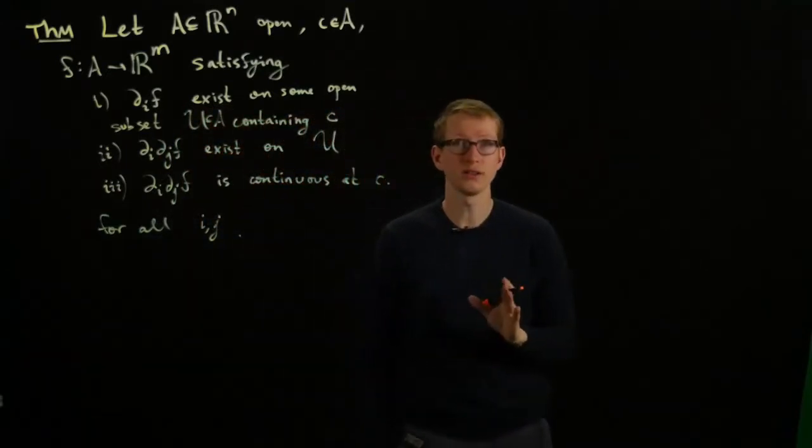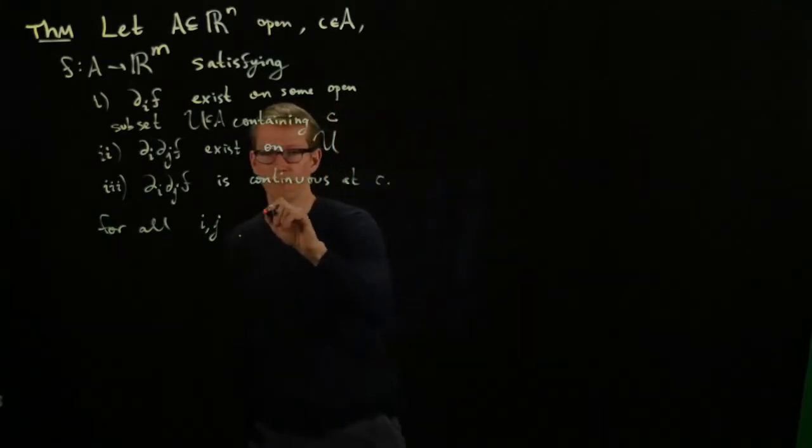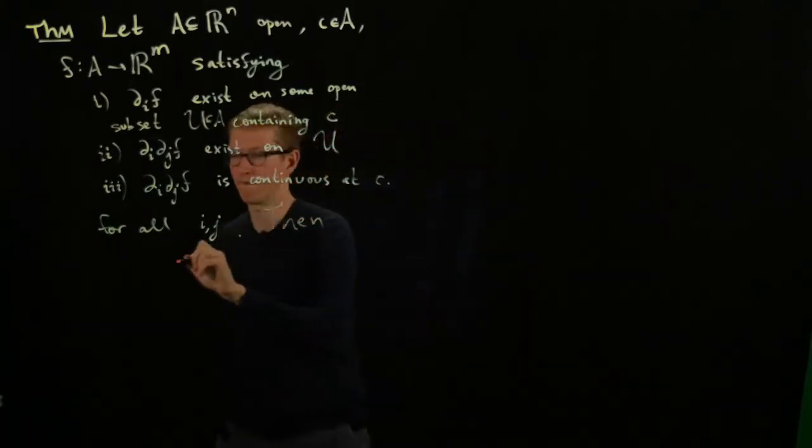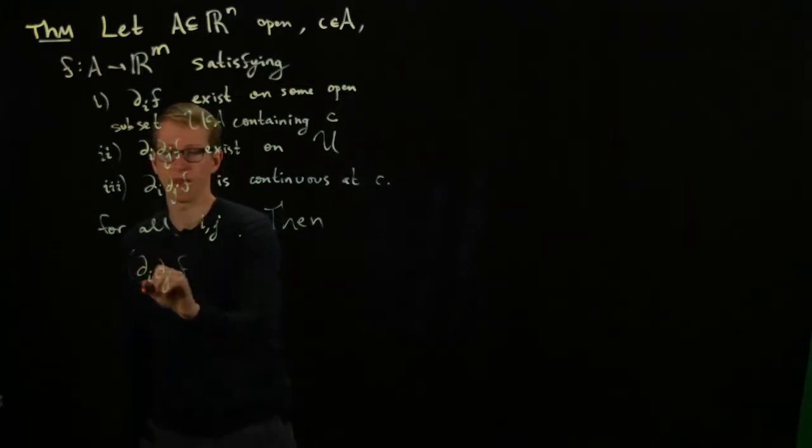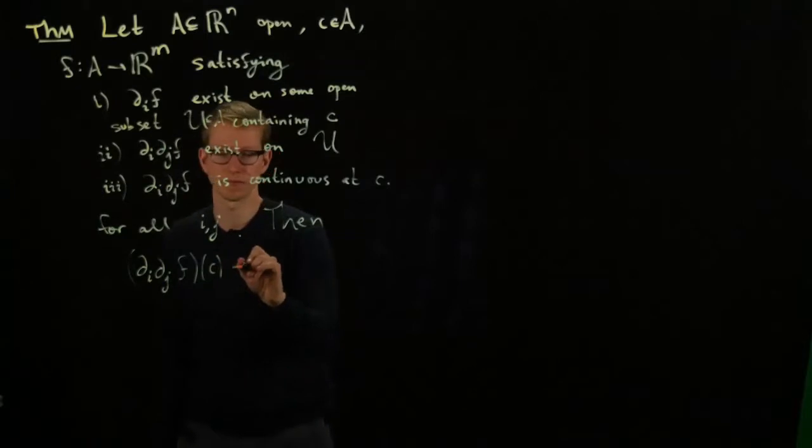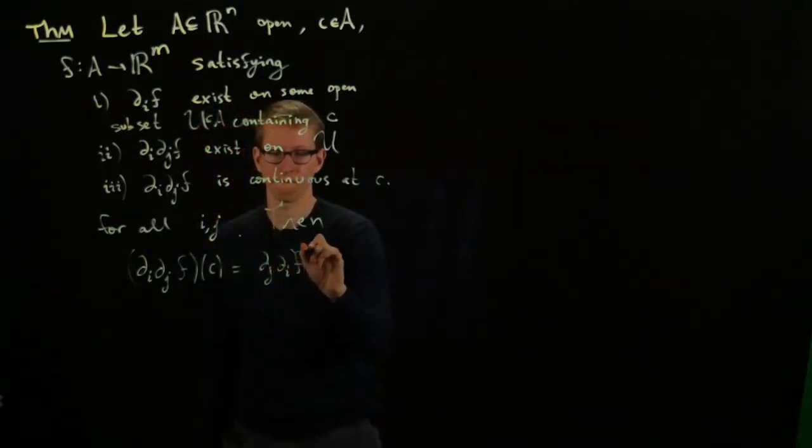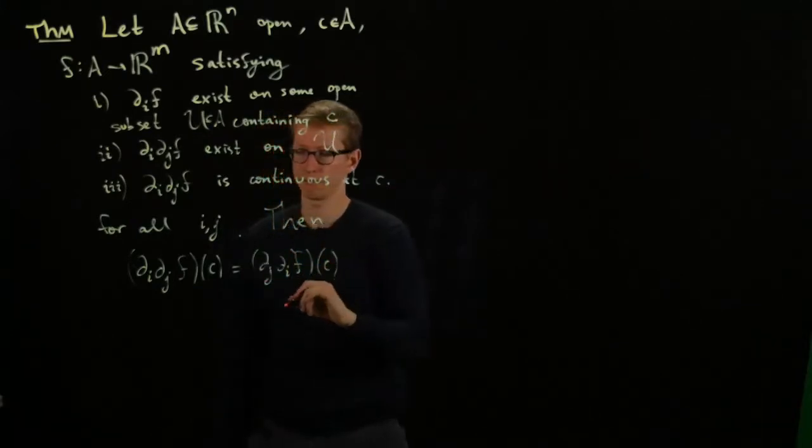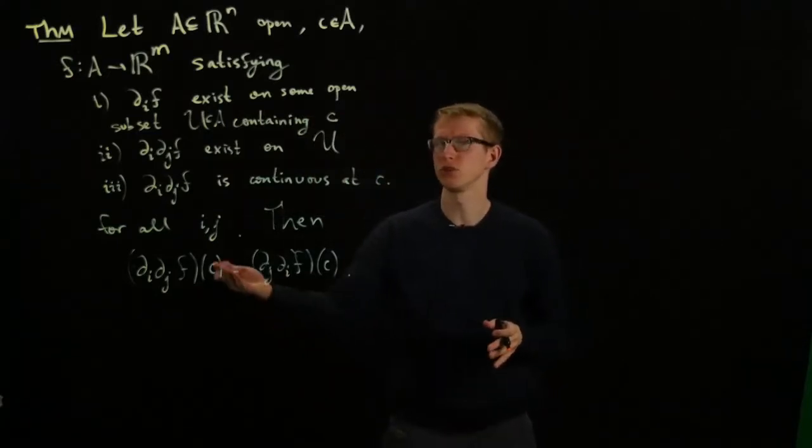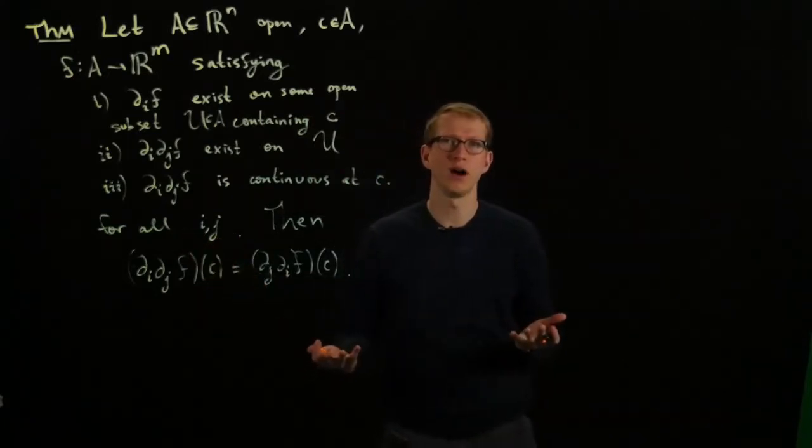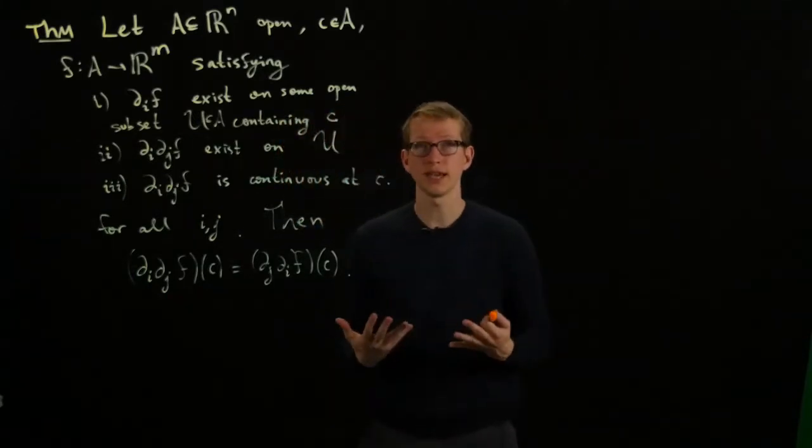Then it turns out that the partial derivatives acting on the function commute at the point C. This actually makes sense if we only assume for some arbitrarily chosen i and j, some fixed i and j. What we'll do is give a sketch of the proof.